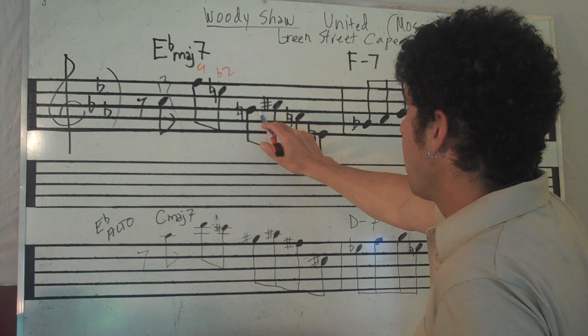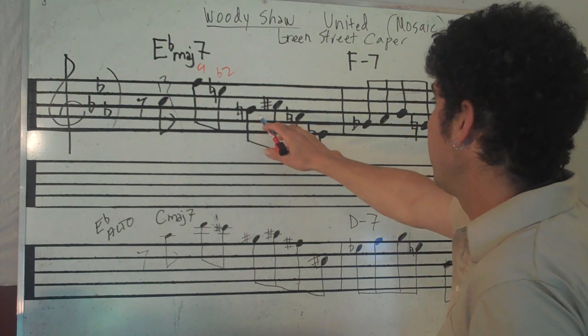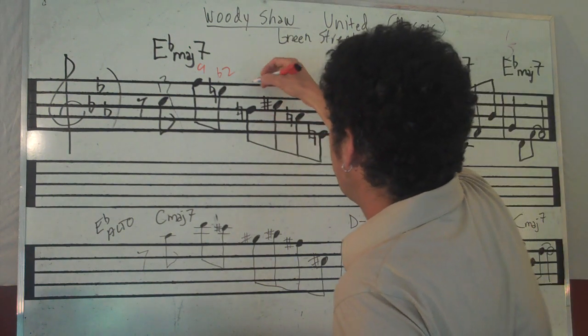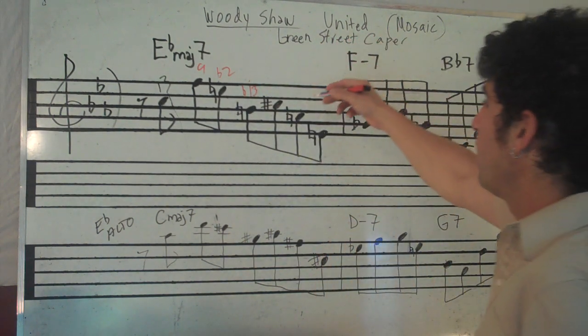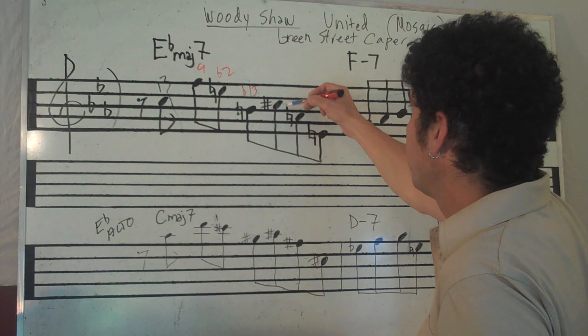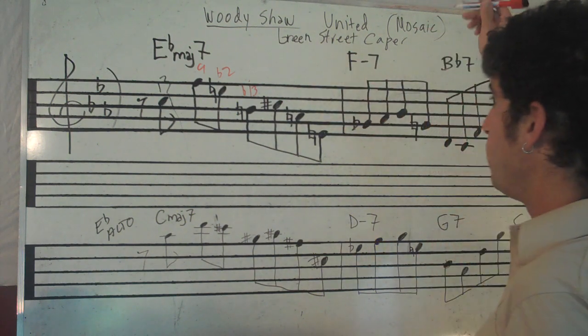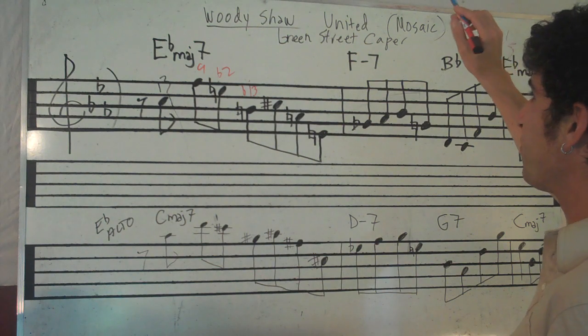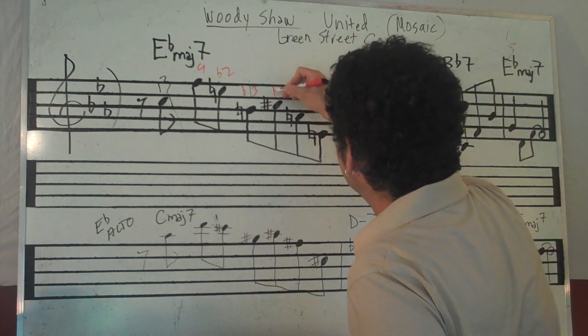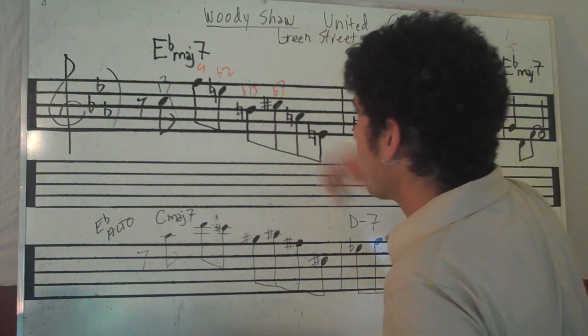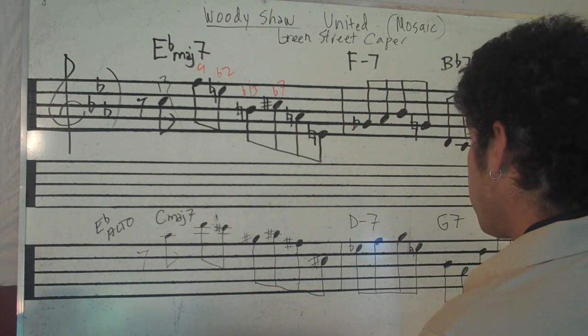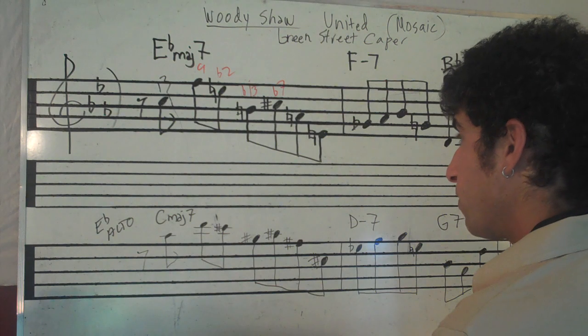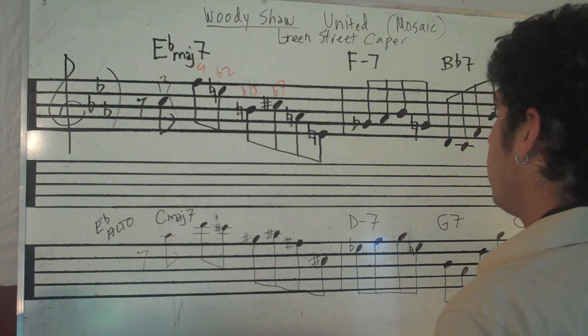We'll call it flat 2, I guess. Then he's got a B here. So that would be flat 13 or flat 6. A C sharp, which would be flat 7. So he's playing flat 7 over a major chord. He's playing this note. Very strange.